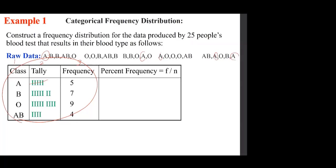For more information we can calculate percent frequency. Percent frequency is the frequency divided by n. Here n is the total sum of the frequency column — that is the total size. If you add them up that becomes 25. So for example, 5 divided by 25, then 7 divided by 25.